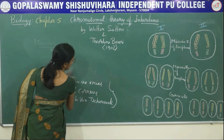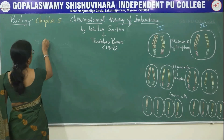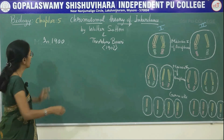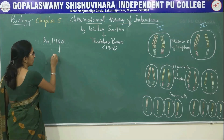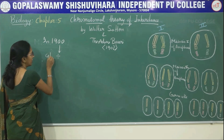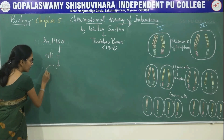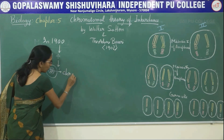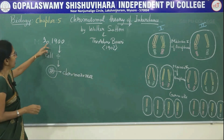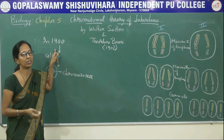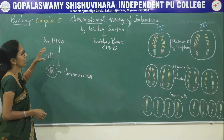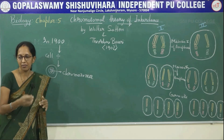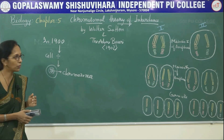At the same time, in 1900, due to the advancement in microscope technology, some scientists observed that there are a number of changes taking place in cell division. They observed that inside the nucleus there is a presence of certain structures, and these structures are said to be chromosomes.